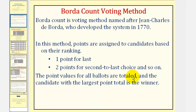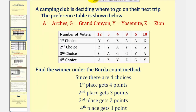Let's look at an example. Here's the preference table for a camping club that is deciding where to go on their next trip, where A represents the Arches, G represents the Grand Canyon, Y represents Yosemite, and Z equals Zion. Notice how we have four choices here, so first choice would receive four points, second place would receive three points, third place two points, and fourth place one point — which means every vote in the first row would be worth four points.